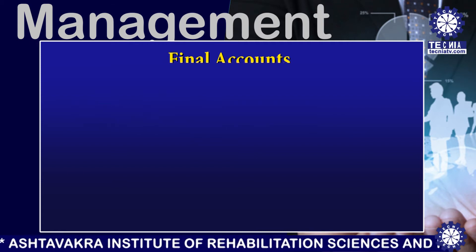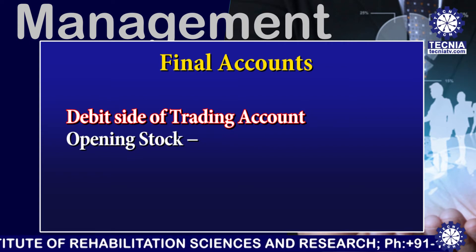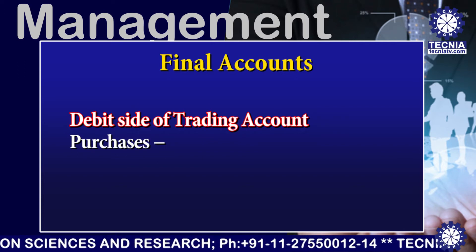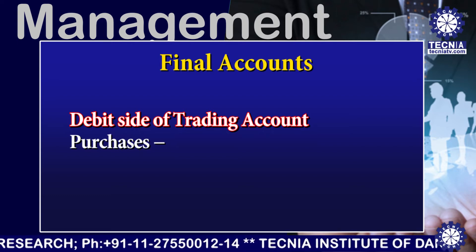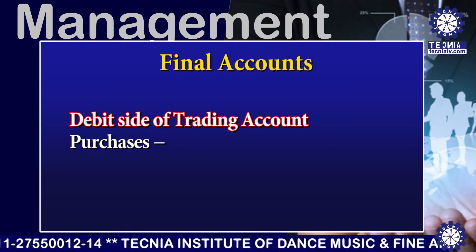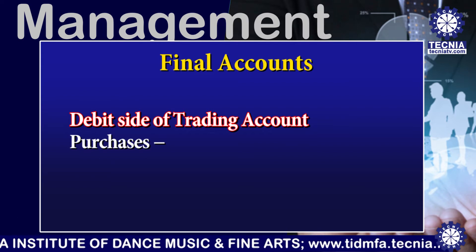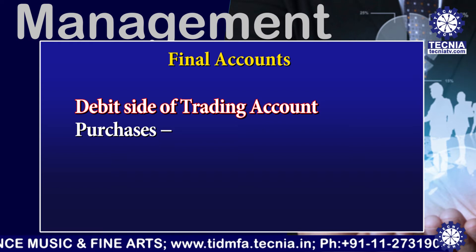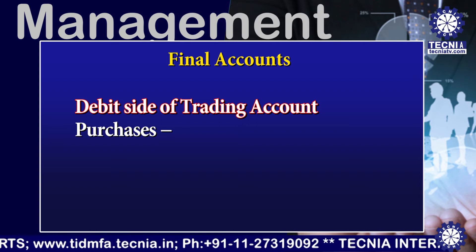The first item on the debit side is Opening Stock. The closing stock of the last financial year appears on the debit side of the trading account as the opening stock of the current financial year. The second item is Purchases. Total purchases — that is, net purchases (cash and credit purchases of traded goods during the current financial year, less any purchase returns) — appear on the debit side of the trading account.